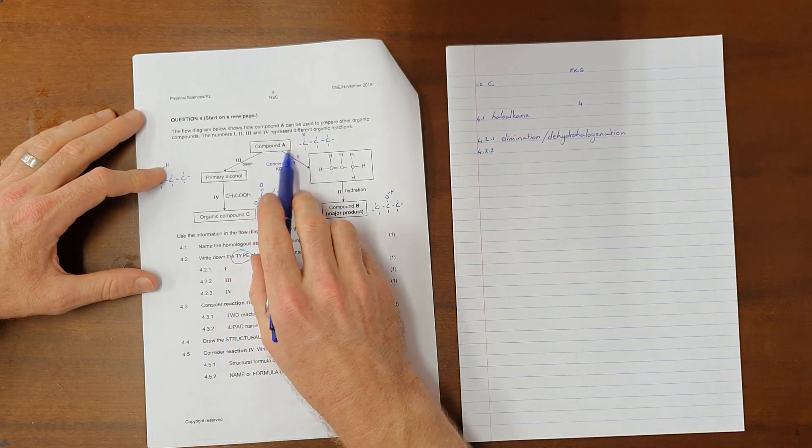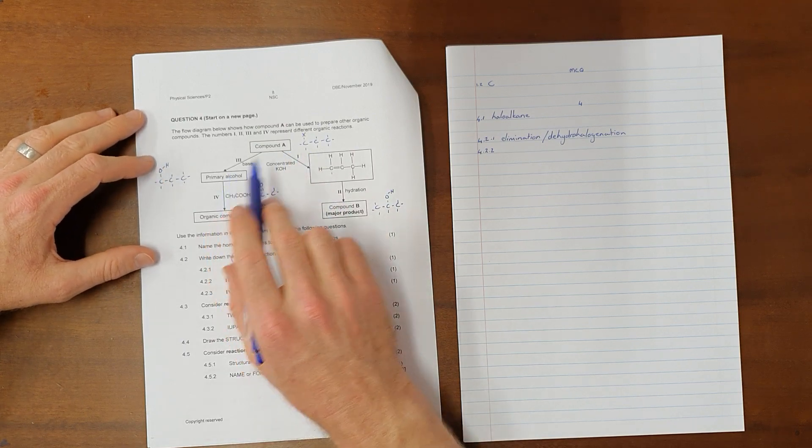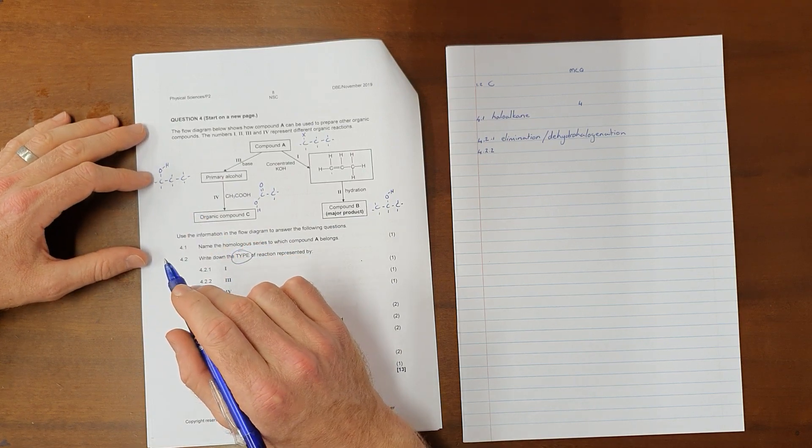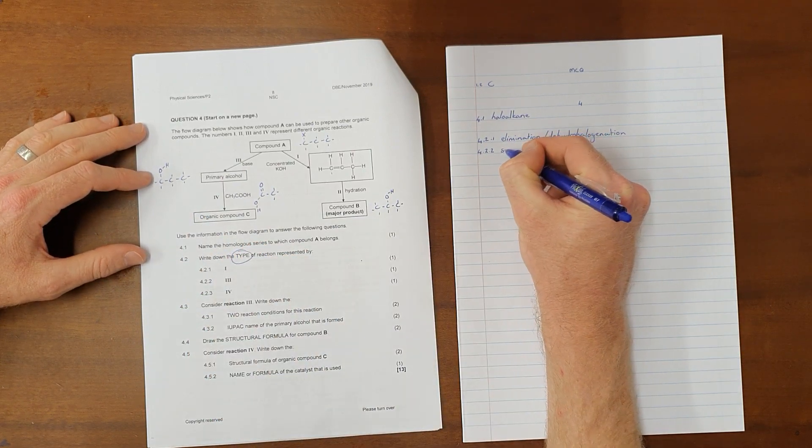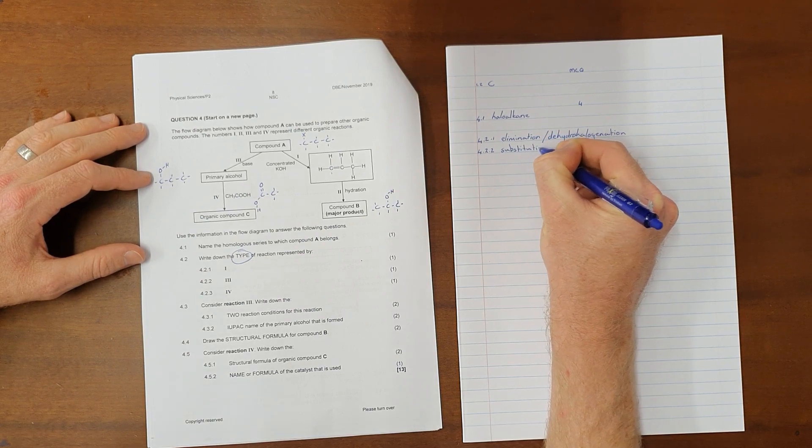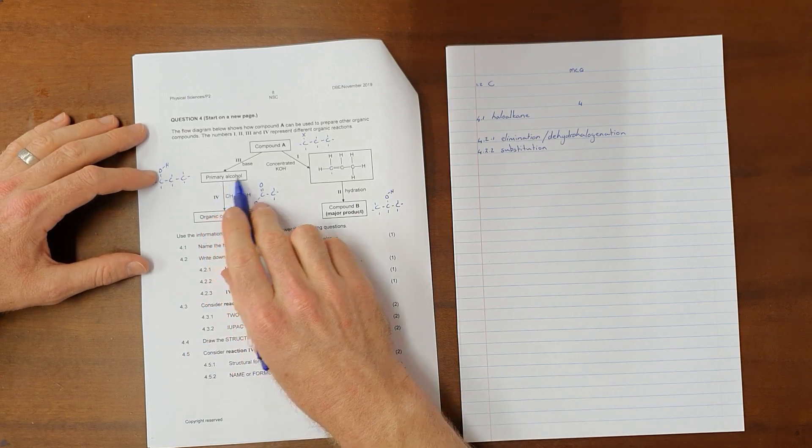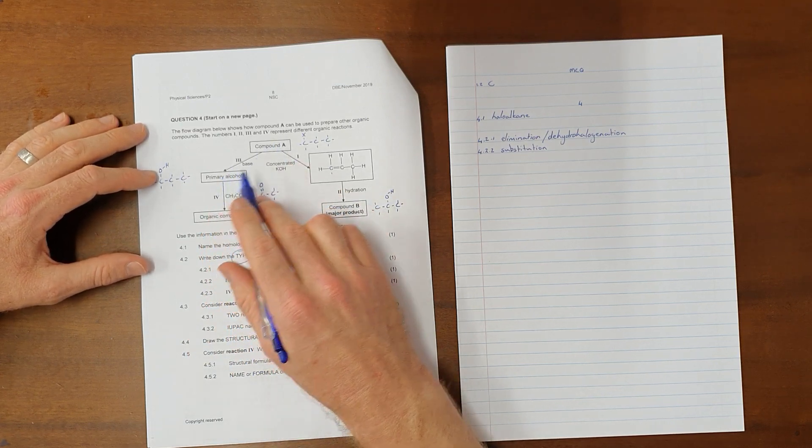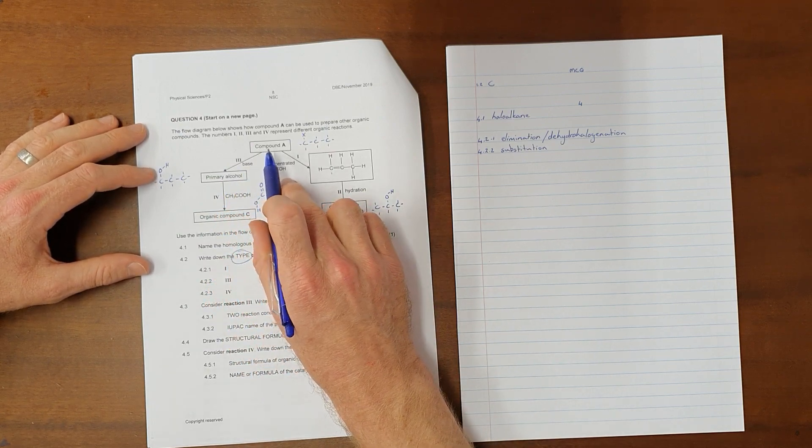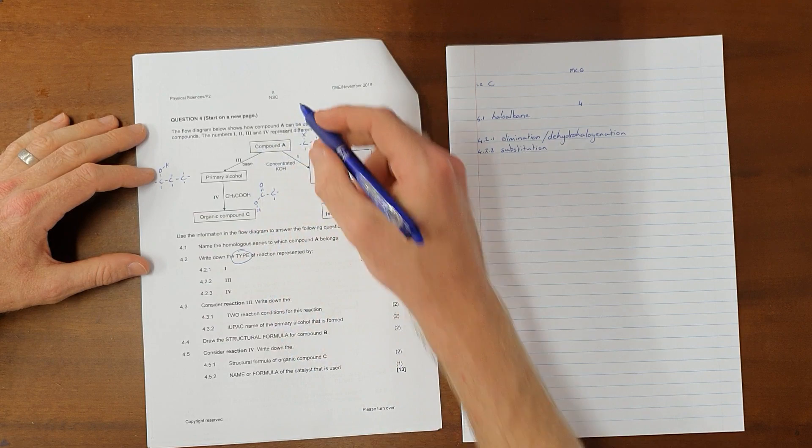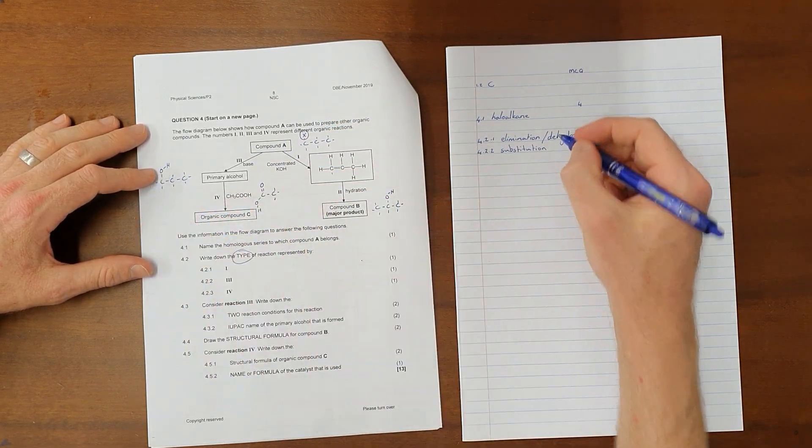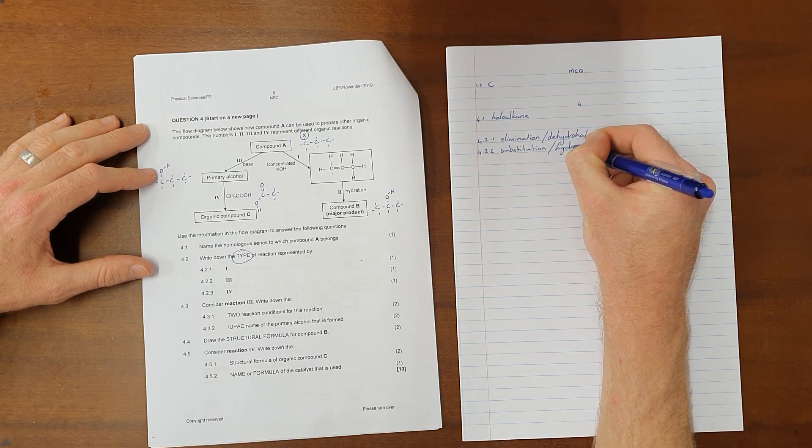The same goes for question 4.2.2, reaction number 3. Here we can see we go from a haloalkane to a primary alcohol, that is a saturated compound to a saturated compound. That is only possible through a substitution reaction. We know that we can identify substitution reactions by seeing that there are no double bonds made or broken in that reaction. So that means that it must be a substitution reaction. And specifically, this substitution reaction is one where we have replaced the halogen with a hydroxyl group, and we call that a hydrolysis substitution.